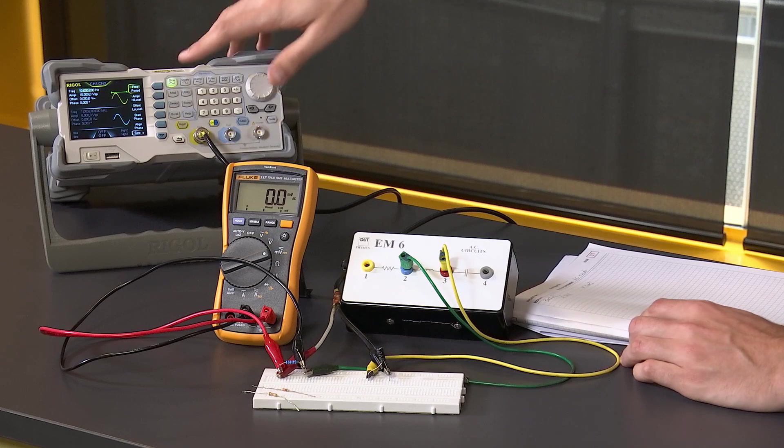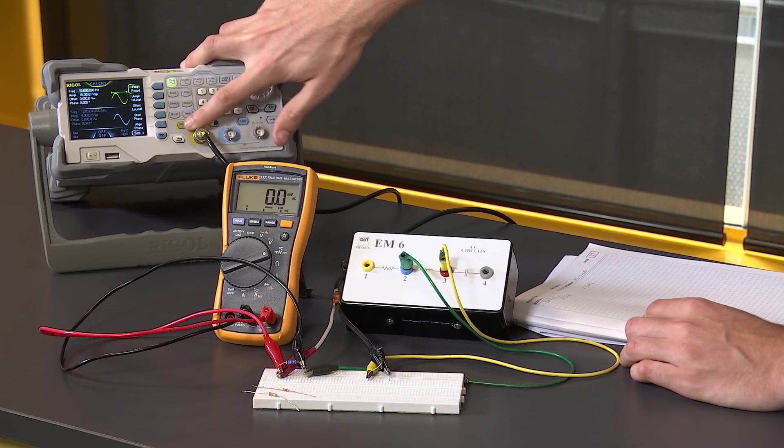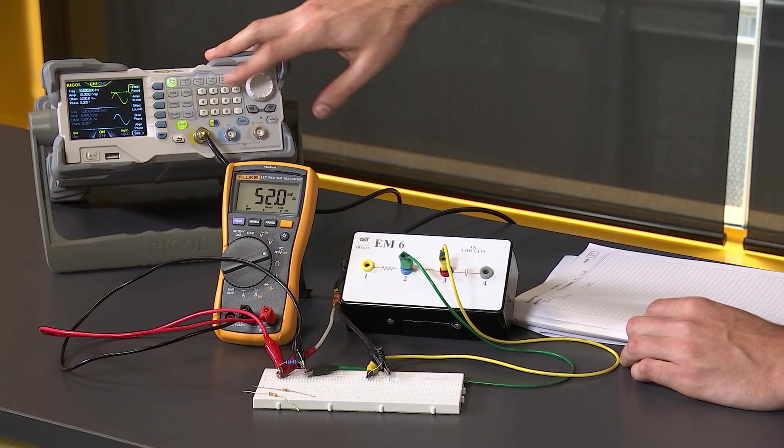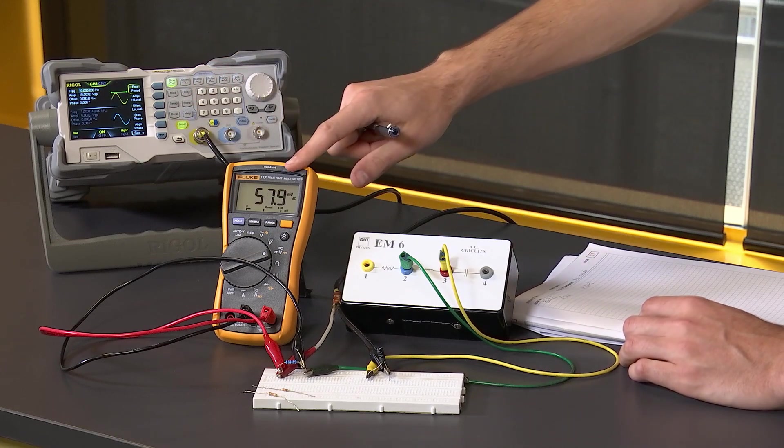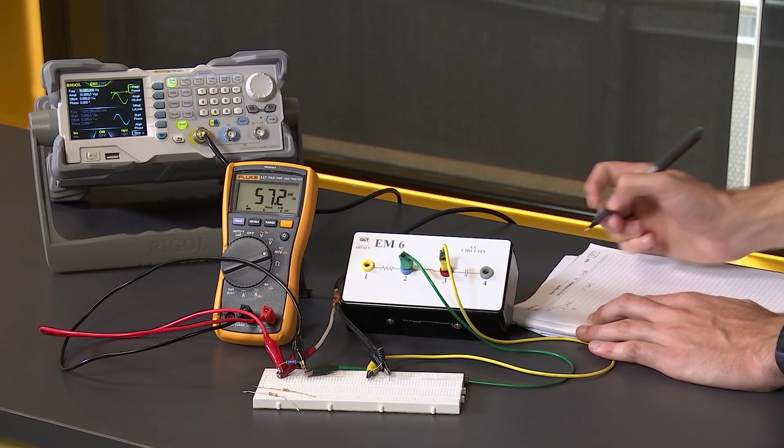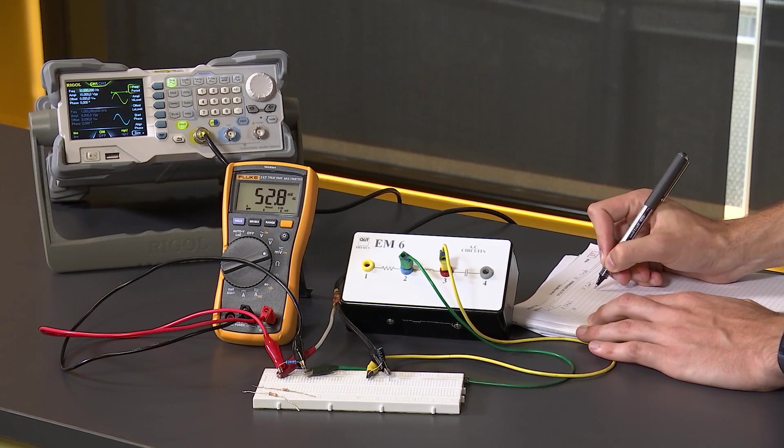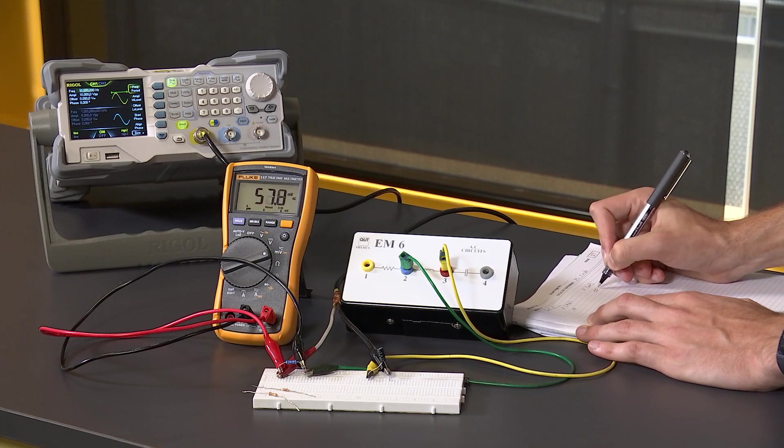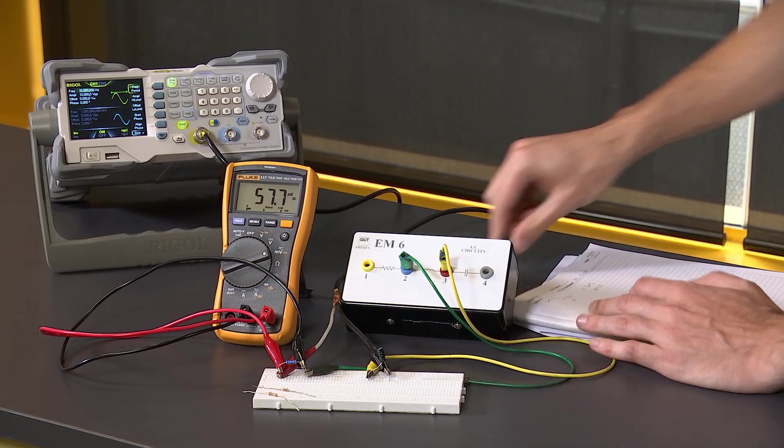Okay, now I'm going to press output one to switch on the power supply and record the voltage drop in the resistor at this frequency. So with 10 Hertz, the voltage drop is 55 plus or minus 3 millivolts.